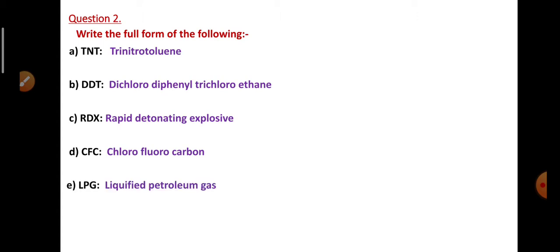Question number two: Write the full form of the following. First one is TNT - its full form is trinitrotoluene. Next, DDT - its full form is dichlorodiphenyltrichloroethane. RDX - it is rapid detonating explosive. CFC - chlorofluorocarbon. LPG - liquefied petroleum gas.